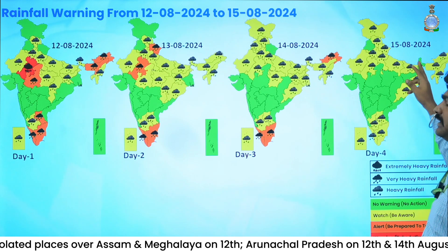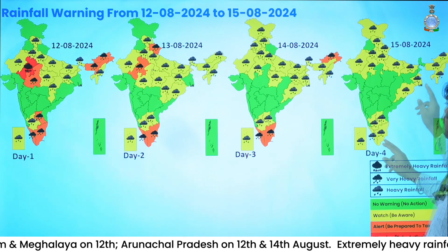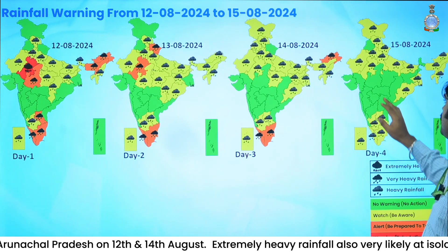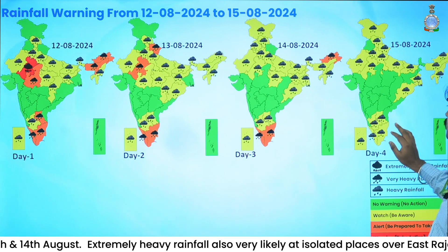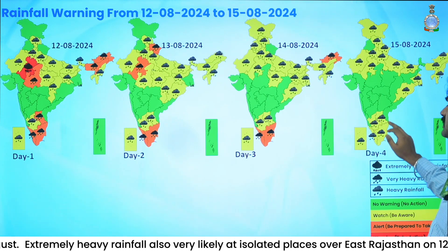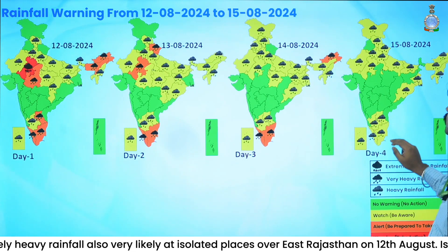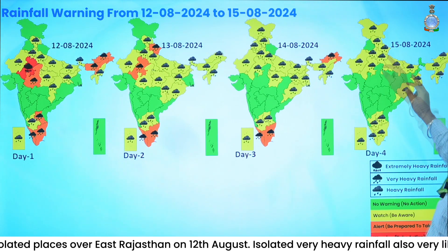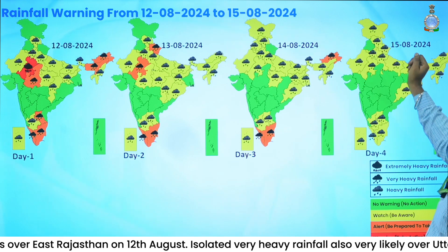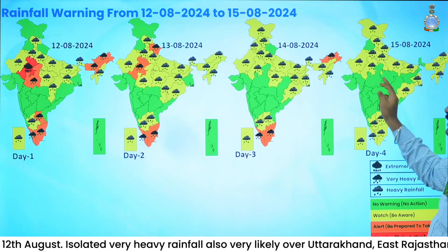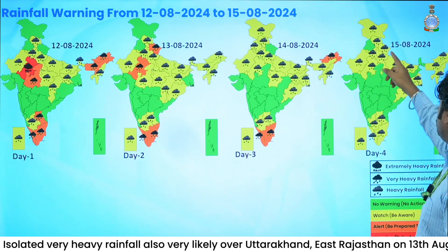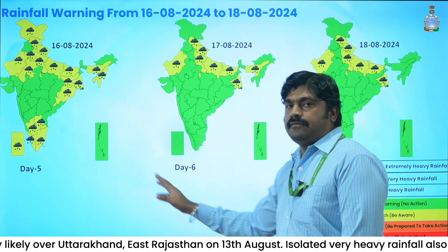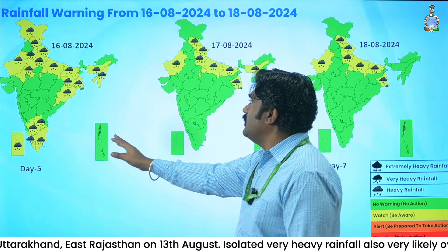Valid for 15th August 2024, heavy rainfall warnings shown in yellow have been issued over many places, especially the southern states, eastern states, Odisha, Jammu and Kashmir, Rajasthan, Uttar Pradesh, and Uttarakhand. This is the Day 5 forecast valid for 16th August.